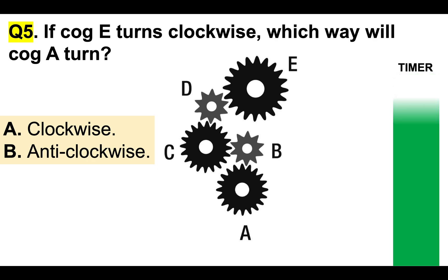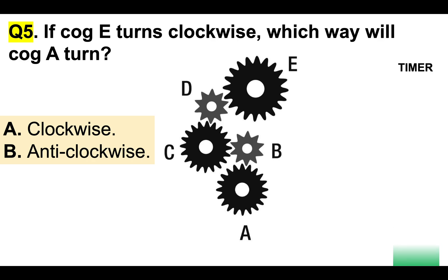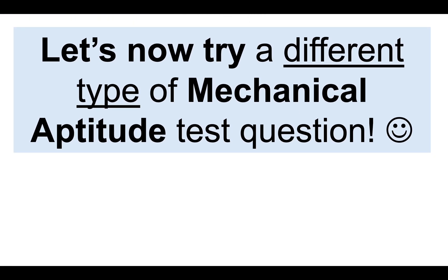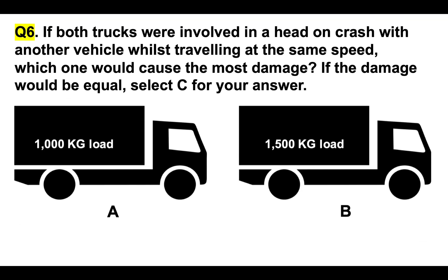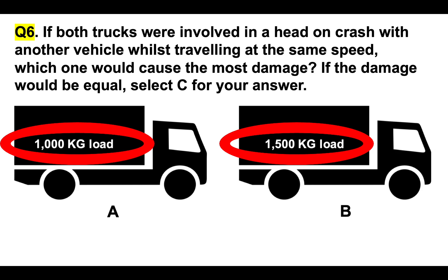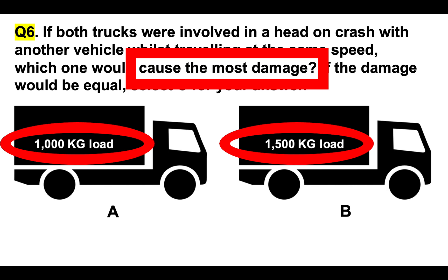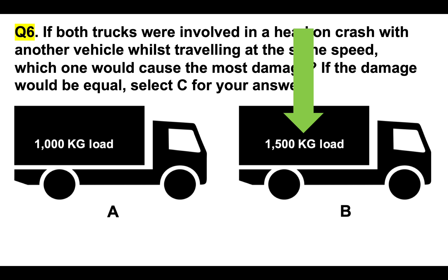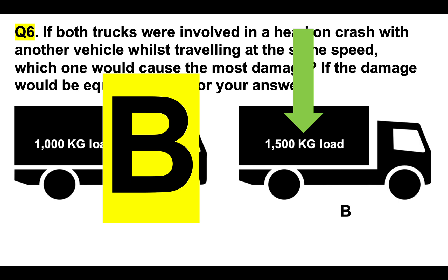Question 6: if both trucks were involved in a head-on crash with another vehicle whilst travelling at the same speed, which one would cause the most damage? If the damage would be equal, select C. We have two identical trucks in shape and size, but carrying different loads — truck A has a 1,000 kilogram load, truck B has a 1,500 kilogram load. Because B is carrying the most weight, that is the one that would cause the most damage. The correct answer to question 6 is B.